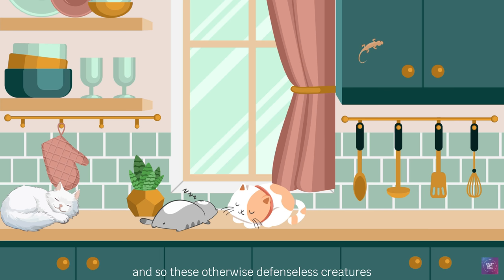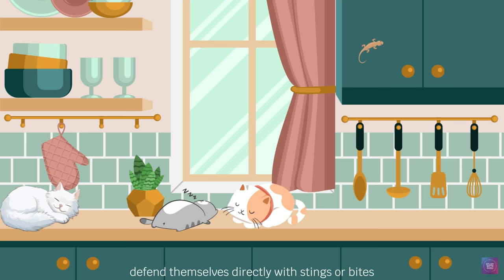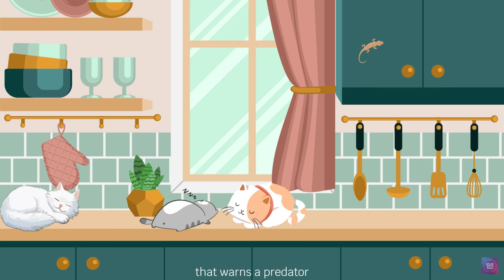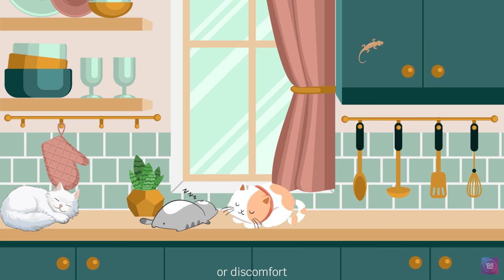These otherwise defenseless creatures are overlooked or passed by. Other organisms defend themselves directly with stings or bites, or with poisons or other noxious chemicals. Such organisms often assume bold, characteristic colors and markings, called warning coloration, that warns a predator — reminds it — that this creature can inflict pain or discomfort, or that it tastes very bad.